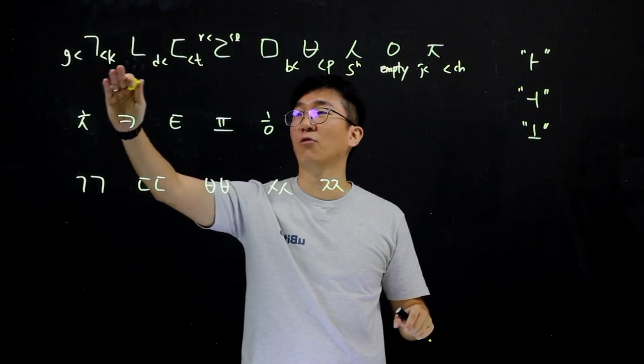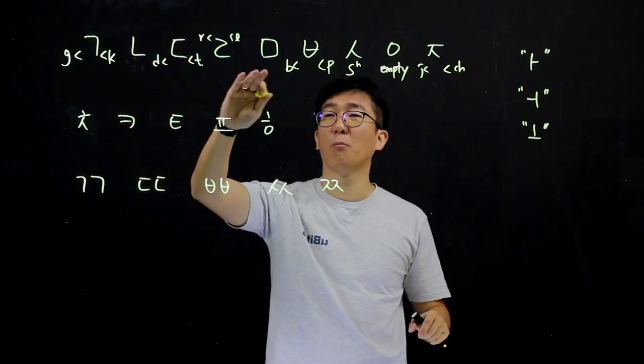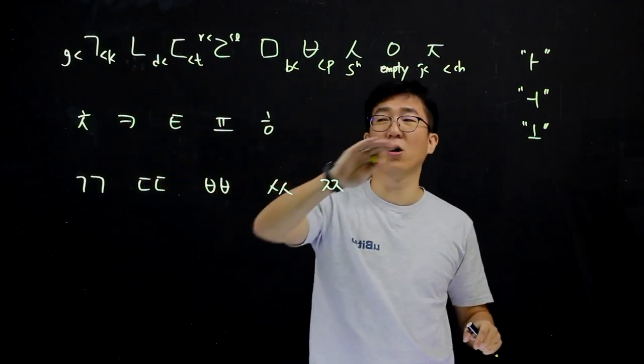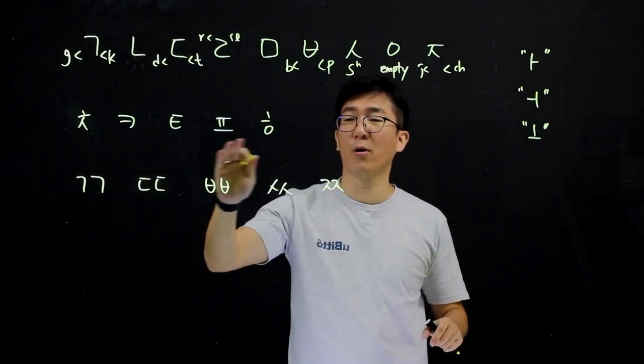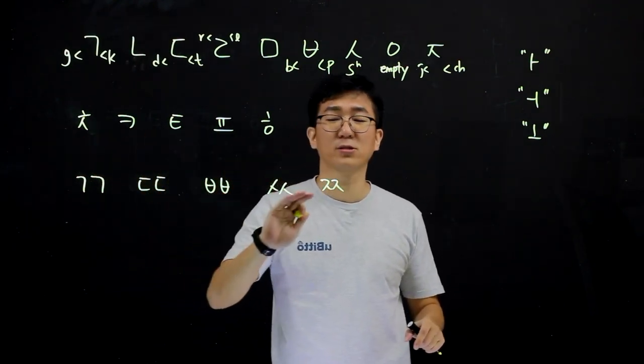Then you can say ka, na, da, ra, ma, ba, sa, a, ja, cha, ka, ta, pa, ha, ka, ta, pa, sa, ja.